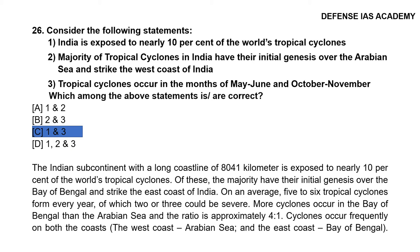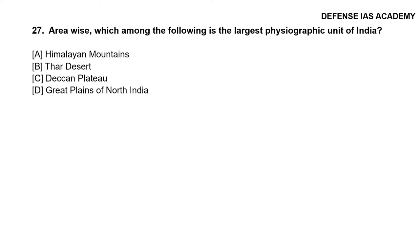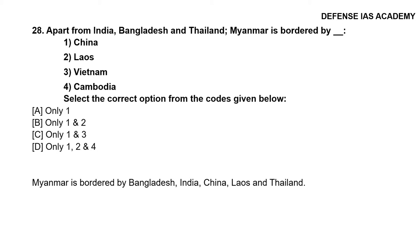Cyclones occur frequently on both coasts — the west coast where you have the Arabian Sea, and the east coast, the Bay of Bengal. Question 27: Area-wise, which among the following is the largest physiographic unit of India? The correct answer is option C, the Deccan Plateau.